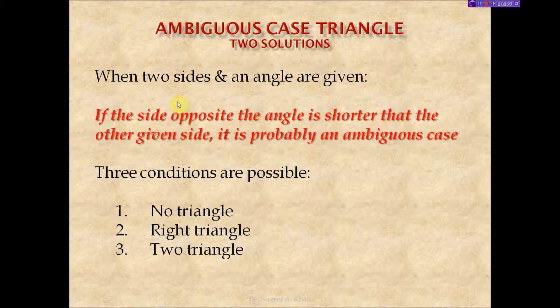An ambiguous case happens when two sides of a triangle are given and an angle opposite one of those sides. The angle has to be opposite one of the sides. We then run the check: if the side opposite the angle is shorter than the other given side, there is a possibility of an ambiguous case.